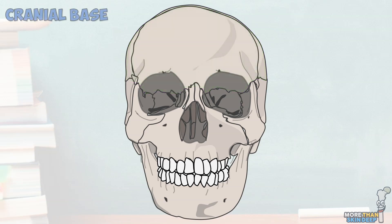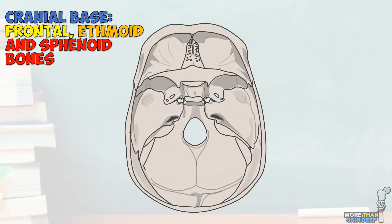Now let's cover the remaining bones of the neurocranium — those that compose the cranial base. We have a more detailed video covering the anatomy of the cranial base linked in the description, but for today we'll cover the salient points. To view the cranial base, we need to cut the skull in a transverse plane and remove the domed calvarium. The cranial base is organised into three tiers, or fossae, which descend anterior-posteriorly, a bit like a staircase, arranged to accommodate the lobes of the brain. There are also numerous perforations in the bones of the cranial base that allow structures such as nerves, arteries and veins to enter and exit the neurocranium.